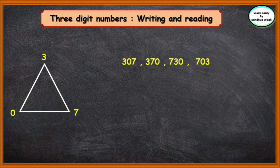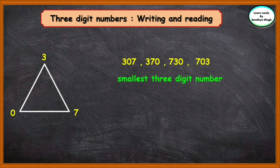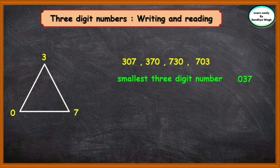Now, children, can we take 0 in hundreds place to form a three-digit number? No, we can't — because 037 or 073 are not three-digit numbers.